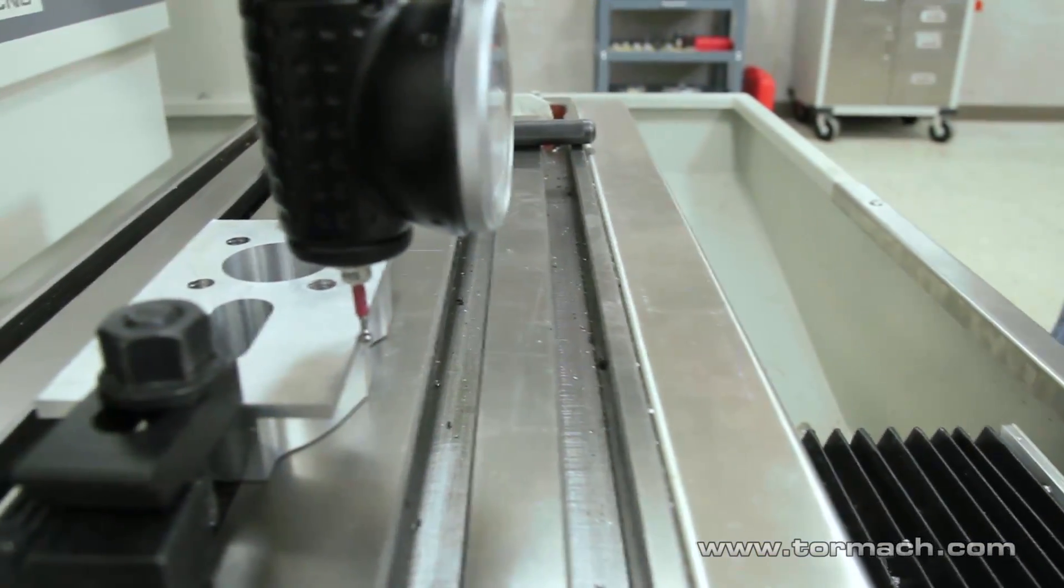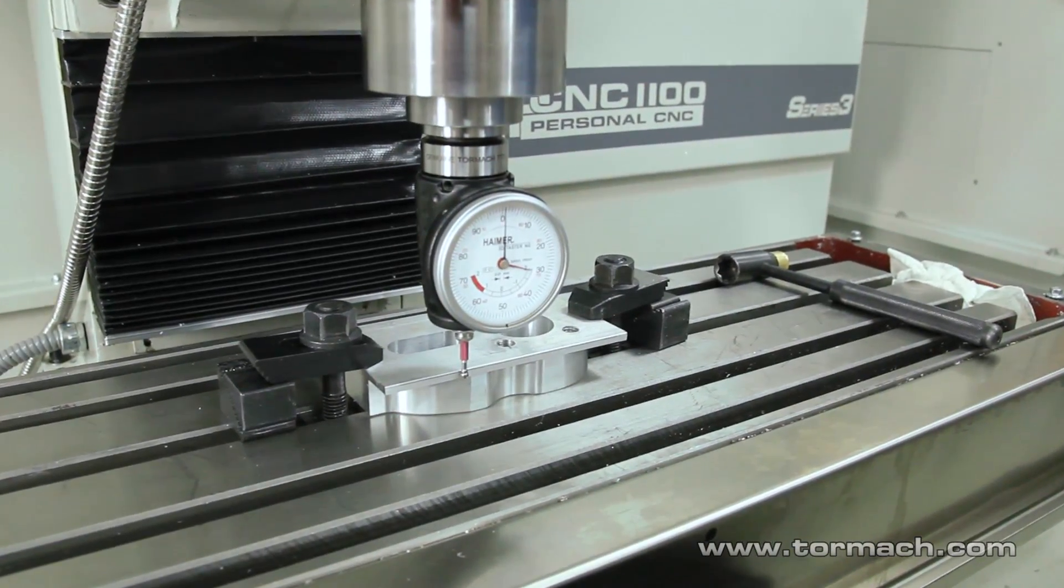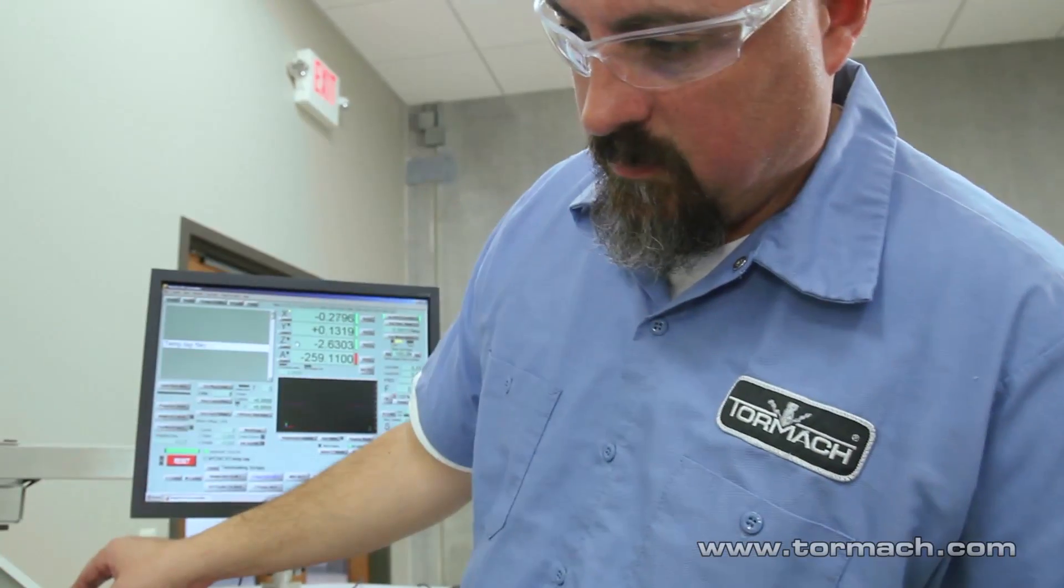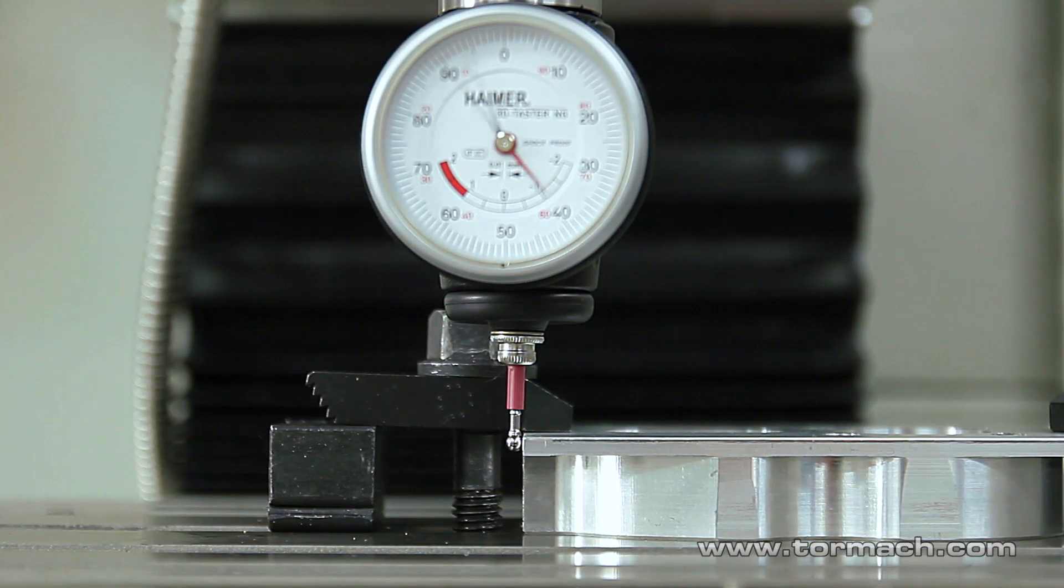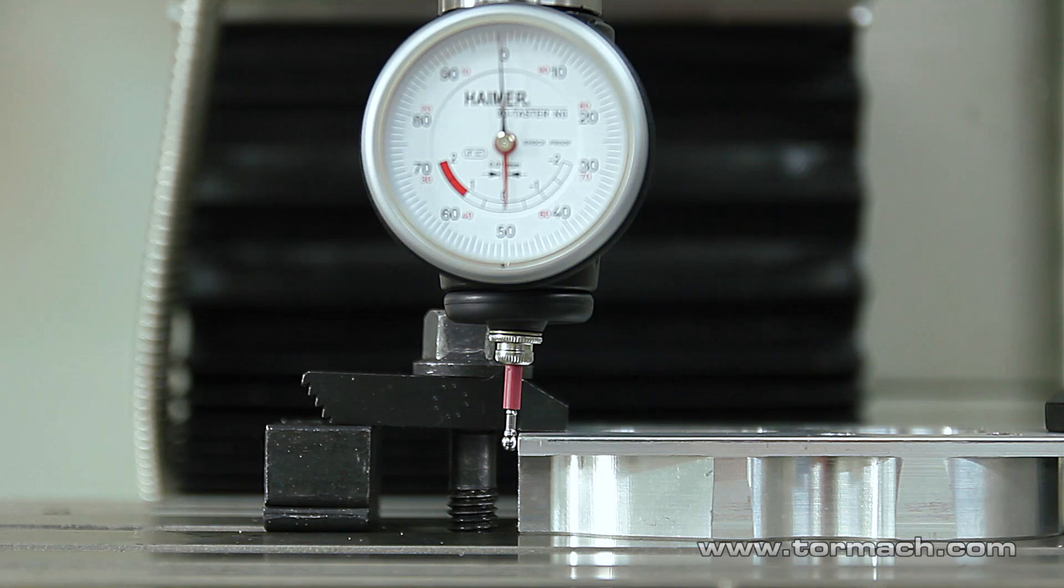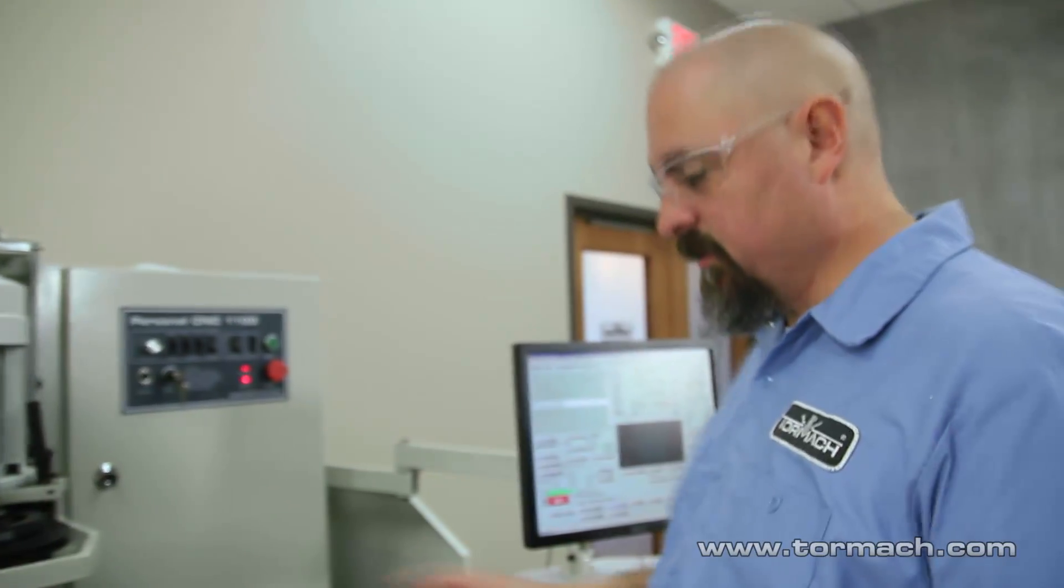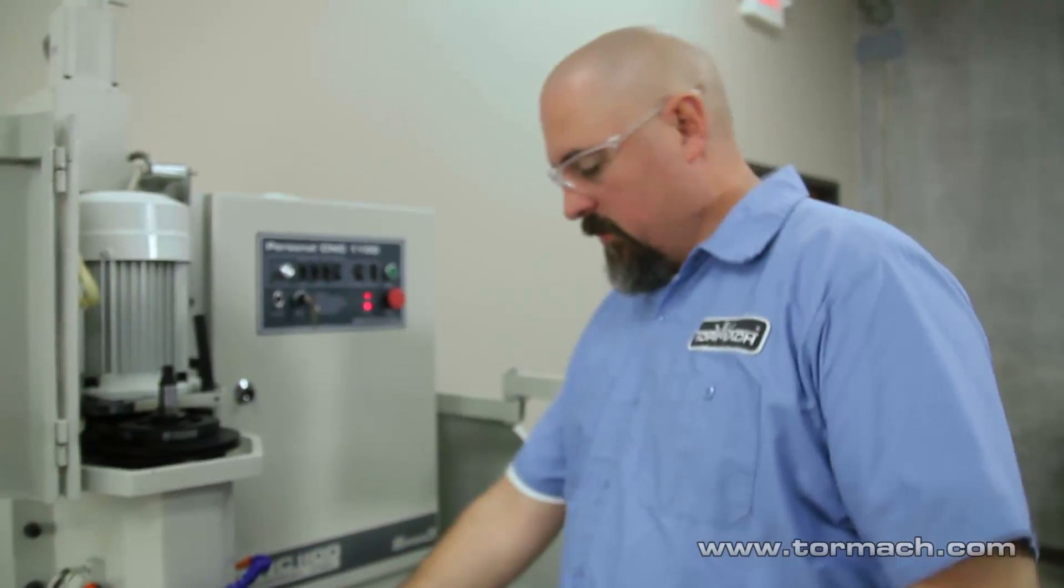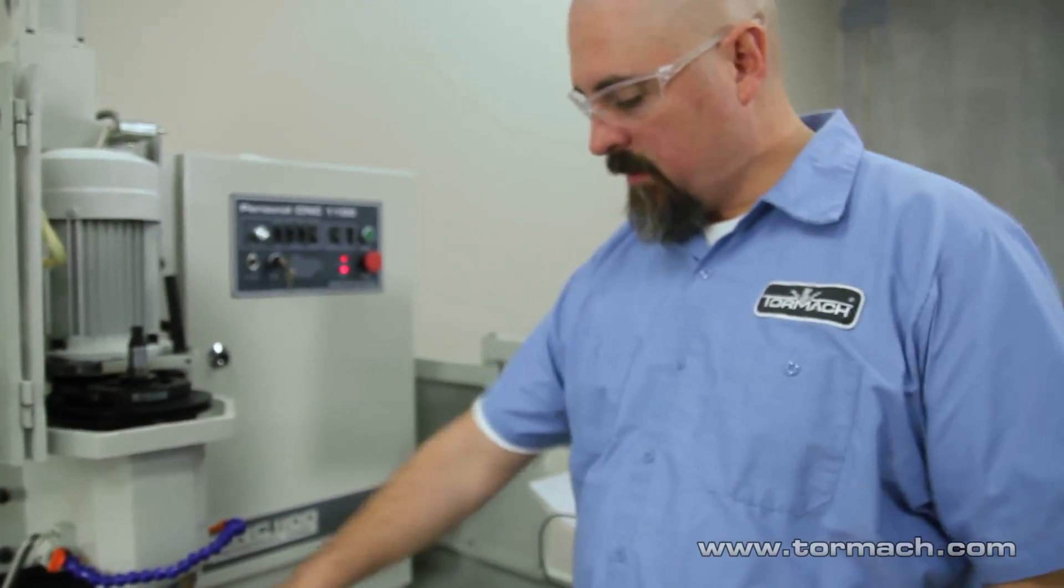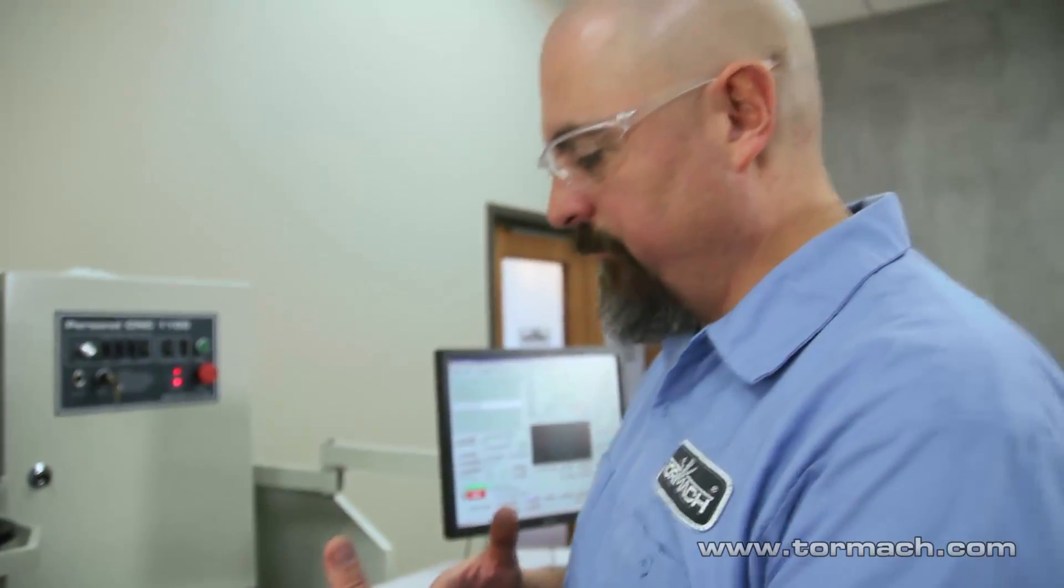So now we can just zero our Y here. Now the front of our part is our zero. And then we can do the same with the X. Okay, so that's how you use it to find a corner.